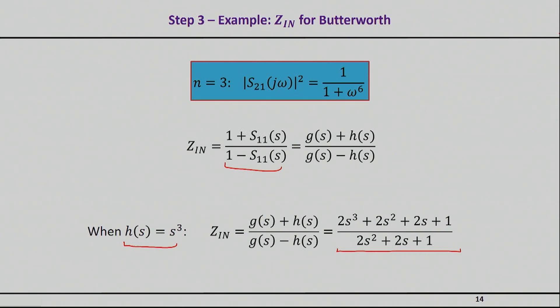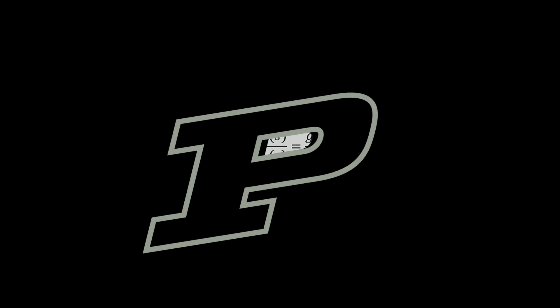While on the other hand, if you choose h(s) to be negative s cubed, basically you will have a different solution which we will see in a little bit.